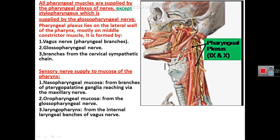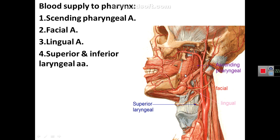All muscles of the pharynx are supplied by the pharyngeal plexus, except the stylopharyngeus which is supplied by the glossopharyngeal nerve. The pharyngeal plexus lies on the lateral wall of the pharynx, mainly on the middle constrictor, formed by branches from the vagus nerve (cranial nerve X), the glossopharyngeal nerve (cranial nerve IX), and fibers from the cervical sympathetic chain. Regarding sensory supply: the nasopharynx receives sensation via the maxillary nerve from the pterygopalatine ganglion; the oropharynx from the glossopharyngeal nerve; and the laryngopharynx from the internal laryngeal branch of the vagus nerve. Blood supply to the pharynx is from the ascending pharyngeal artery, facial artery, and superior and inferior laryngeal arteries.